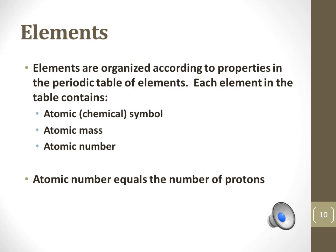Elements are organized on the periodic table according to their properties that are largely controlled by the number of electrons found in the outer shell. The information on the periodic table includes an atomic symbol, atomic mass, and atomic number.